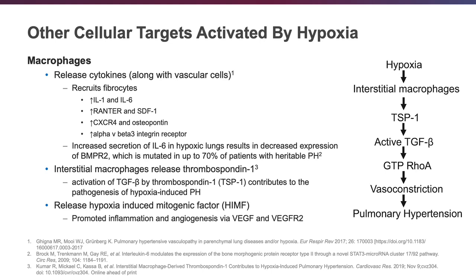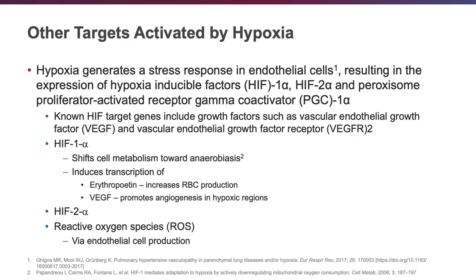Interestingly, increased secretion of IL-6 in hypoxic lungs results in decreased expression of the BMPR2 gene — the gene associated with pulmonary hypertension that is mutated in up to 70% of patients who have the hereditary variety of pulmonary hypertension. HIF-1-alpha and HIF-2-alpha are also upregulated as a stress response in endothelial cells triggered by hypoxia. Upregulation of HIF-1-alpha shifts cell metabolism toward anaerobiasis and includes transcription of erythropoietin, resulting in more red blood cell production, and VEGF, promoting angiogenesis in those hypoxic regions.